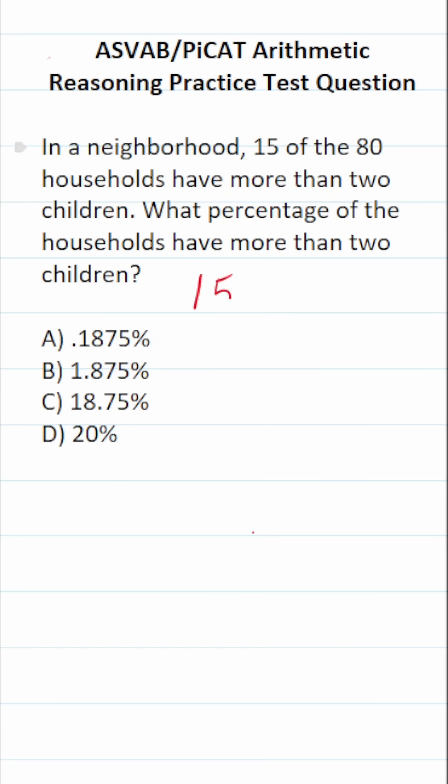We're going to express this as a fraction to get started. That is to say, 15 of the 80 households have more than two children. Then we're going to reduce this fraction. 15 and 80 have a common factor of 5. 15 divided by 5 is 3. 80 divided by 5 is something you should be able to do mentally. 40 divided by 5 would be 8. 80 is double 40, so this is going to be 16.